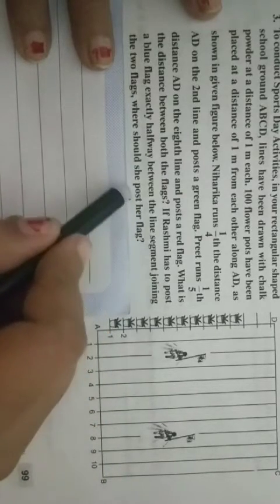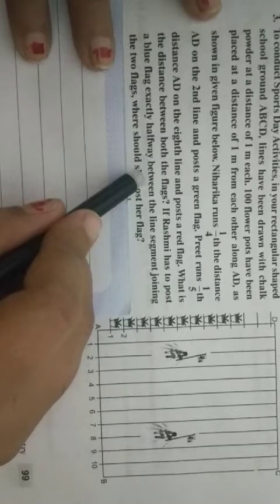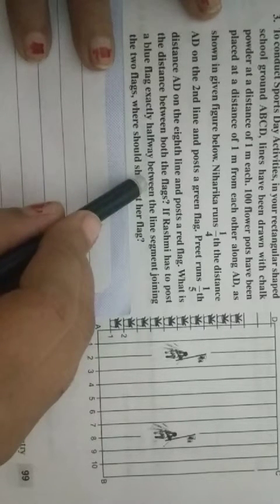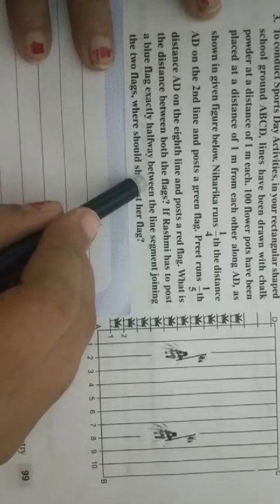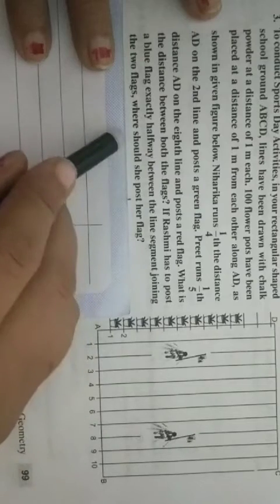if Rashmi has to post a blue flag exactly half way, or if Rashmi has to take a blue flag halfway means in the middle of both, then ratio will be 1 ratio 1.